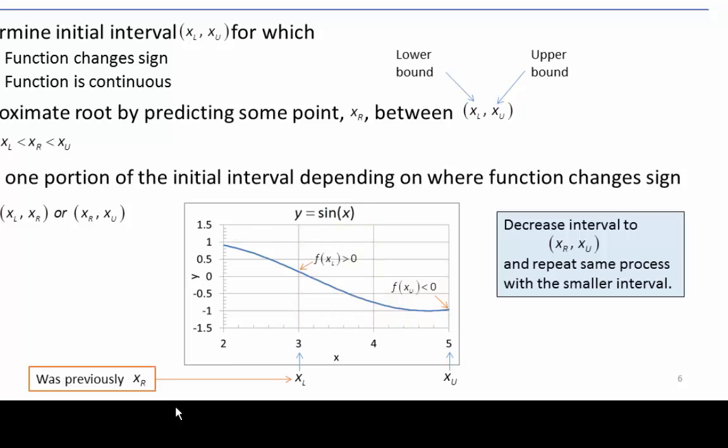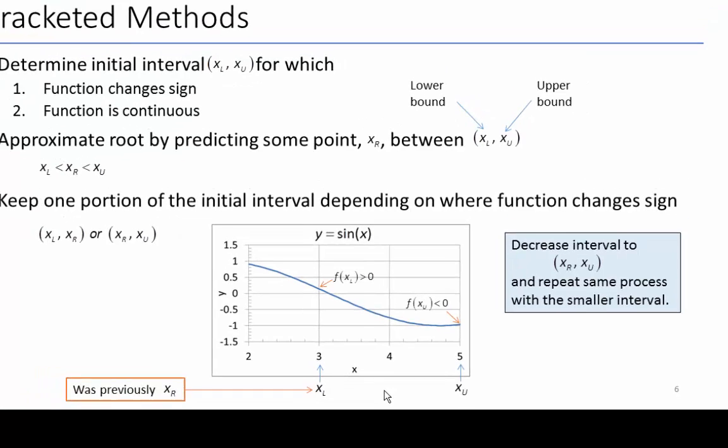So we readjust our bounds. We call XR our new XL, and we have a smaller interval, and we would just continue our bracketed method.